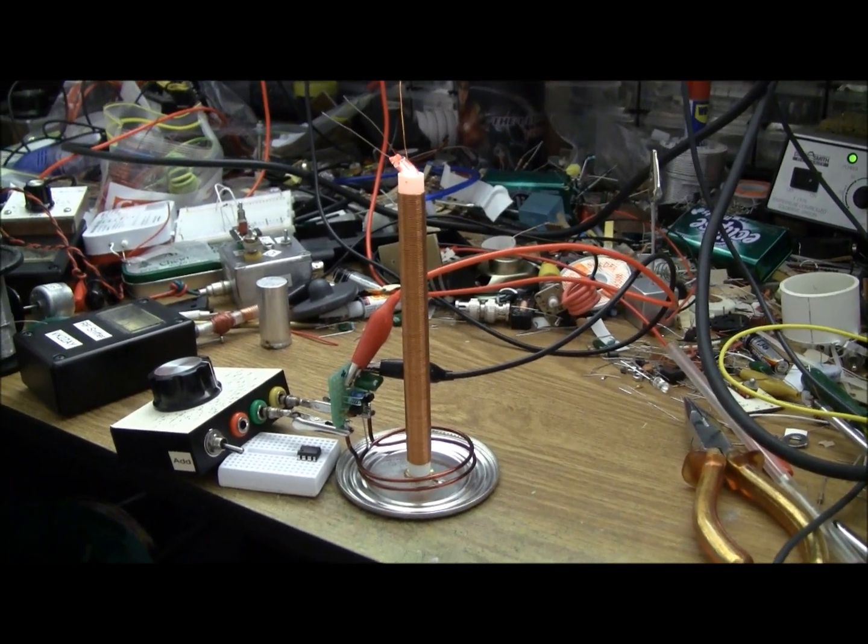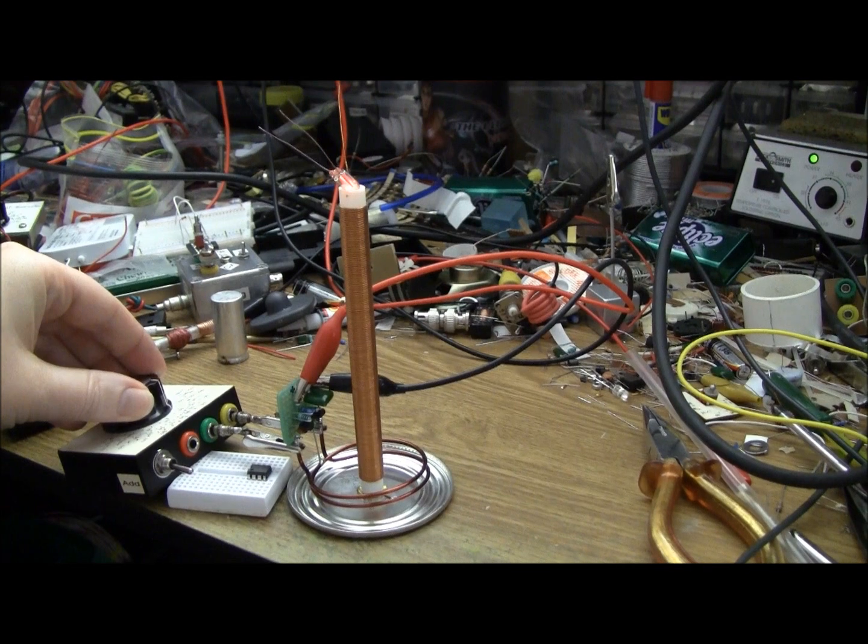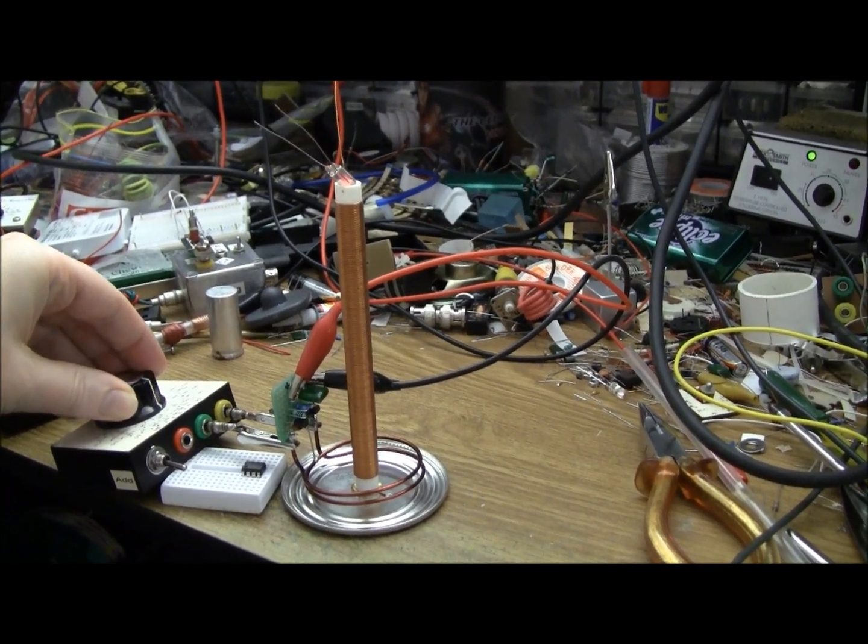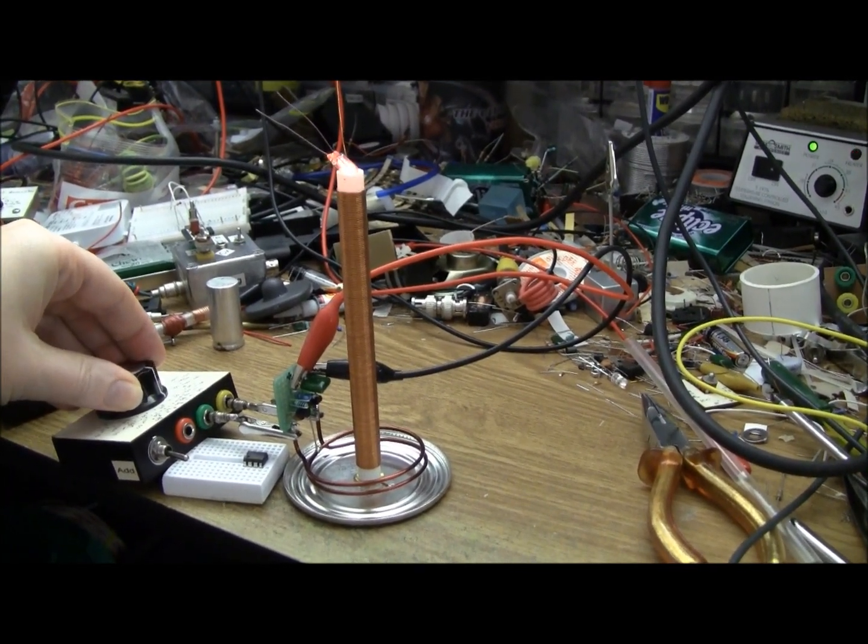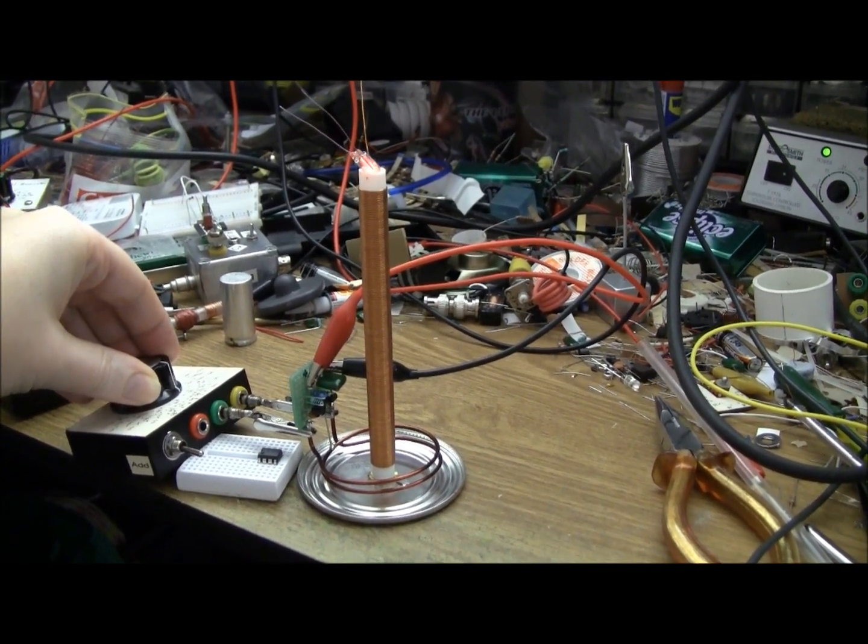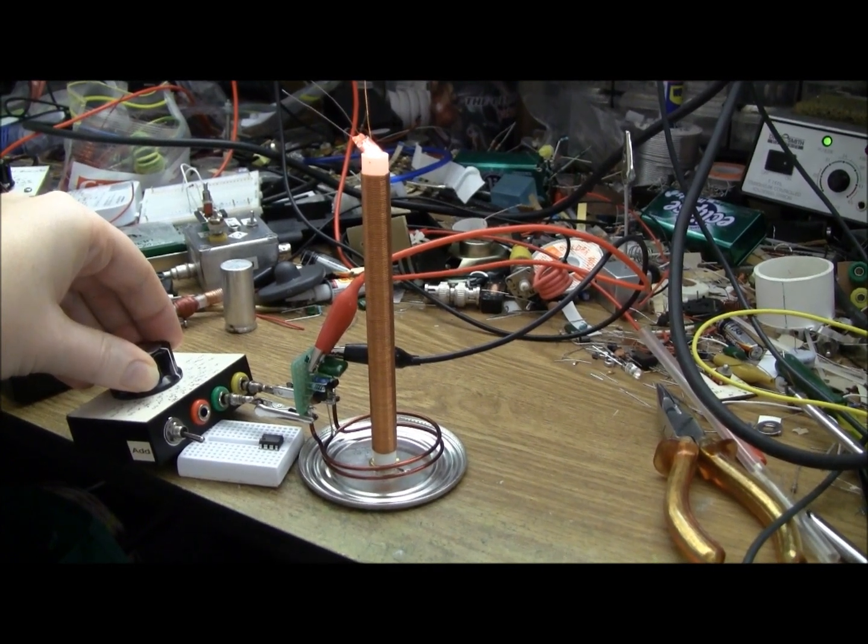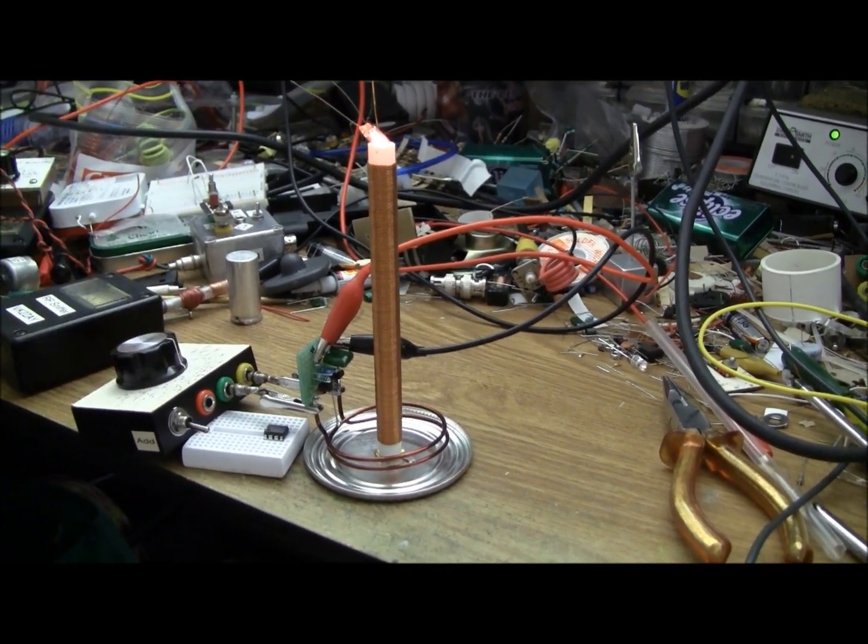I just wound a secondary and stuck a neon bulb in the top there to give it a bit of glow so I could see when it's tuned up. As you can see it's got some hysteresis. The coupling between the secondary and the primary is quite tight and as the secondary approaches resonance it pulls the oscillator which is a bit annoying but for our purposes it doesn't really matter.